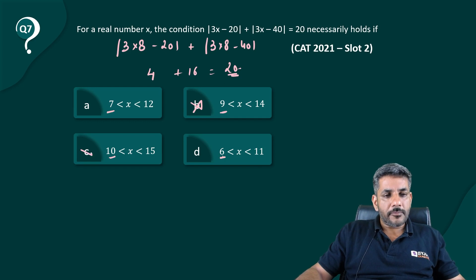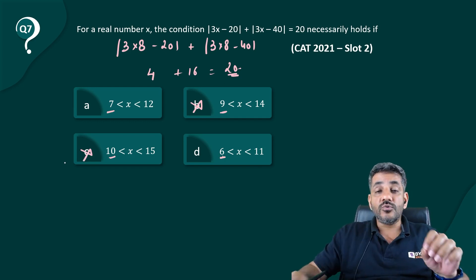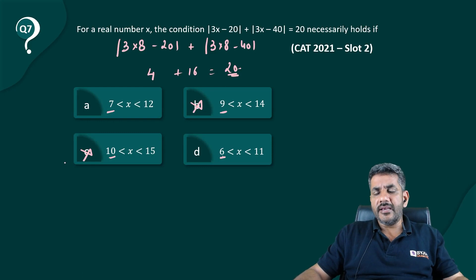Because it satisfies, option B cannot be my answer. Option C cannot be my answer because they do not have 8 in them, whereas option A and D are having 8 in it.